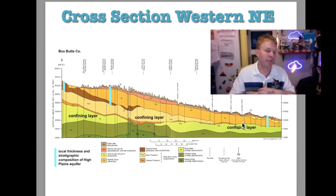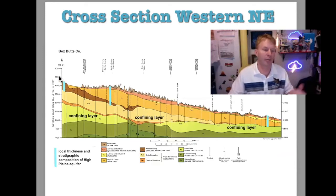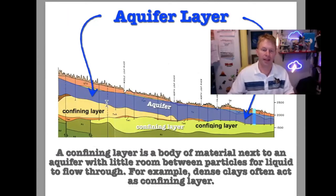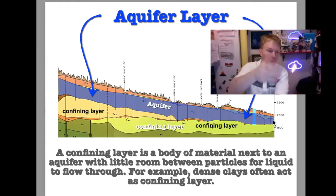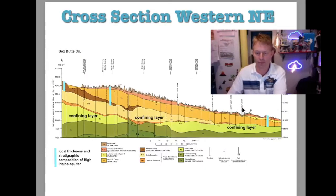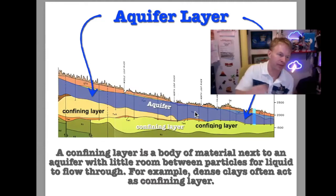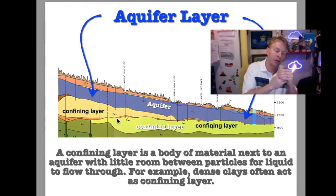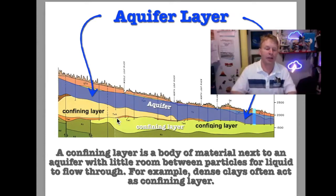This is a cross-section through part of the state of Nebraska that exaggerates the contour so you can see that Nebraska slopes downward from the western end to the eastern end. As it's sloping down, there's something called a confining layer. The Ogallala Aquifer and the High Plains Aquifer are shown, and this orange area is the aquifer zone — the area that's going to hold the water. Below it is the confining layer, meaning water can't go down quickly below it. The aquifer basically has a bottom that holds the water up.